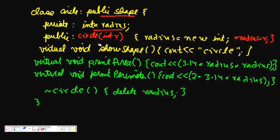So int star radius. I take the constructor, so Circle int r, radius is equal to new int, and then star radius is equal to r. So this we do. And now we have showShape, so I say cout circle.